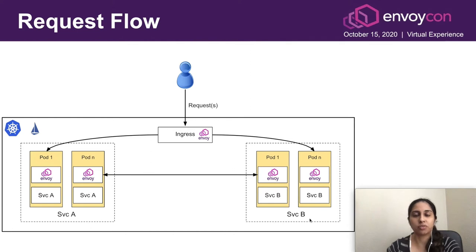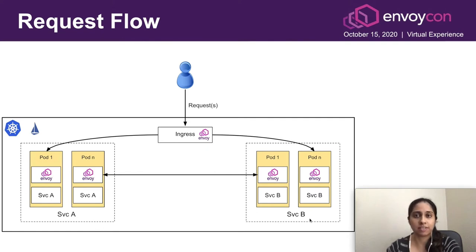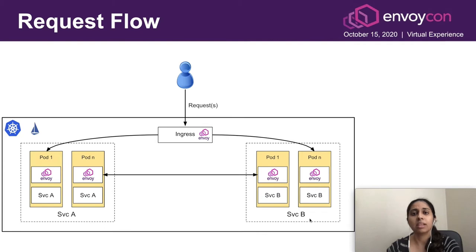The request flow through Envoy proxy: if a request originates from outside the Kubernetes cluster, it must pass through our Envoy ingress layer, which then sends the request to the target pod of the appropriate application. If two services, say A and B, both residing on our Kubernetes cluster, need to communicate, they do so directly using the Envoy sidecar — the request goes from a pod of service A to a pod of service B without going through the ingress layer. Configuration for all these Envoy proxies is provided by our Istio control plane component called IstioD.